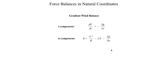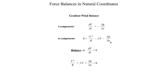Now let's look at the gradient wind balance, which is the balance between pressure gradient force, Coriolis force, and centrifugal force. This is the balance we use when dealing with curved flow where friction is also negligible. Just like geostrophic balance, since gradient wind balance is also a force balance, the forward acceleration must be zero. The only forces acting in a gradient wind balance act 90 degrees to the left or right of the flow pattern — none of the forces point in the same direction as the wind vector.